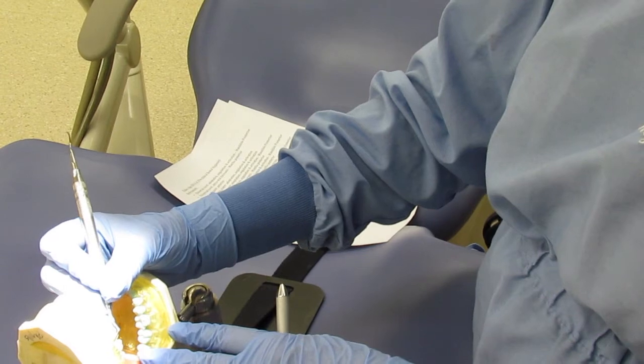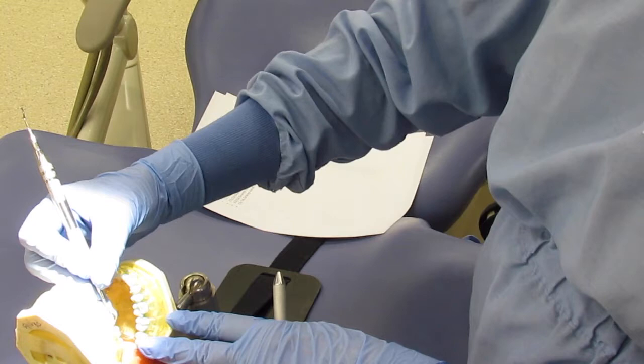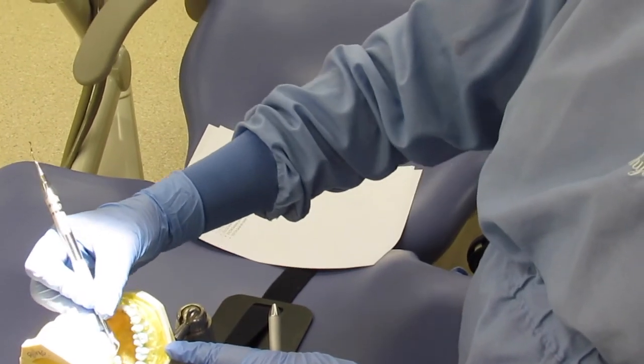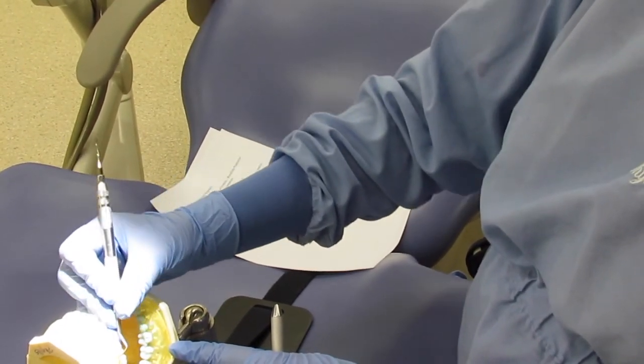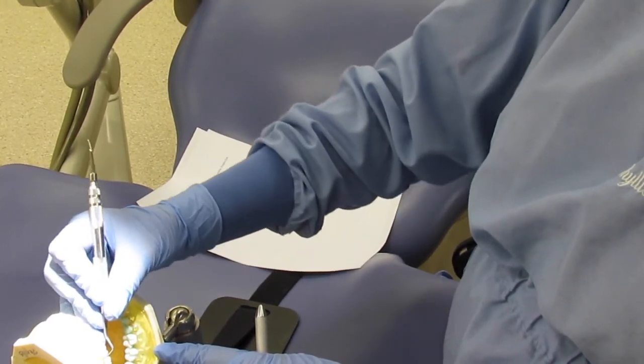Distal surface in number three, you're going to raise your handle slightly, use your secondary blade, and then little tiny up and down rocking strokes and pivot to come around into the interproximal col area of the distal.